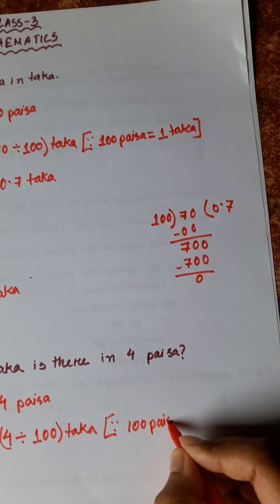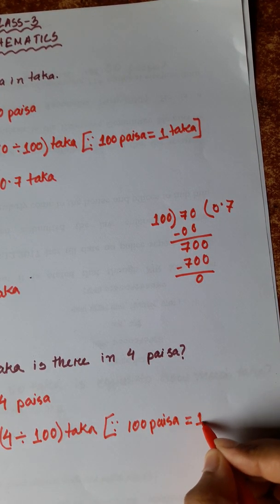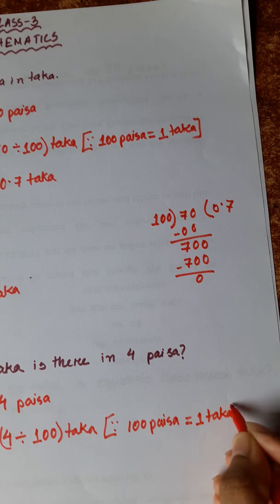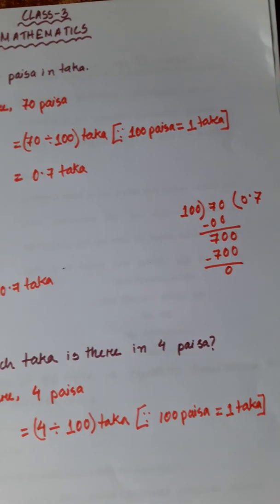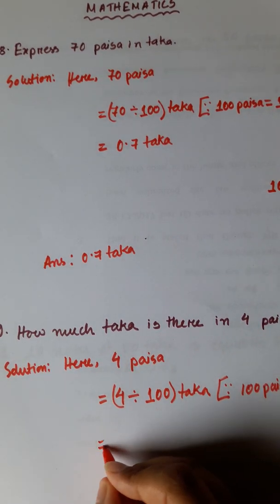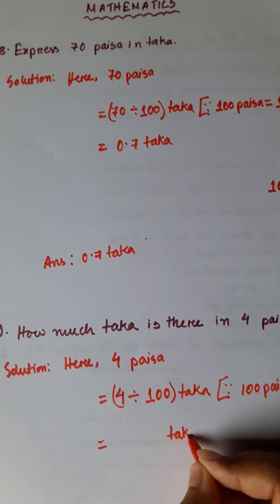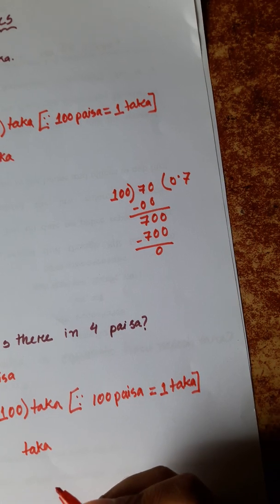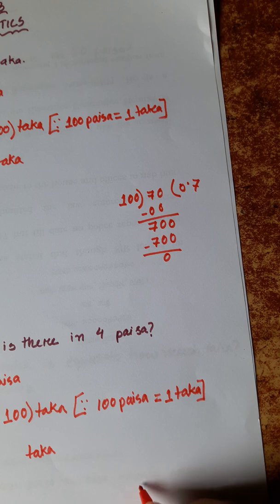100 Paisa is equal to 1 Taka. So now, let's divide it.